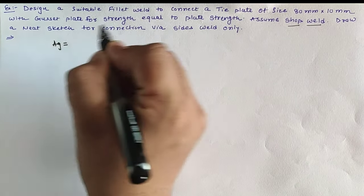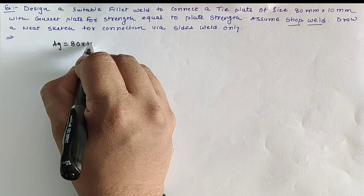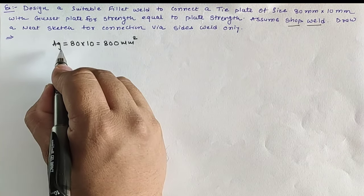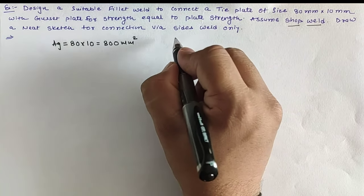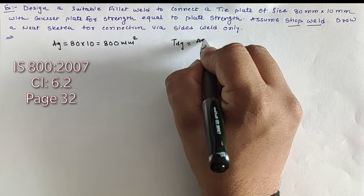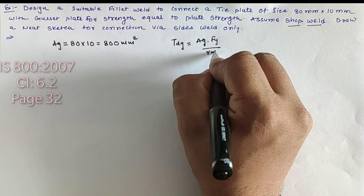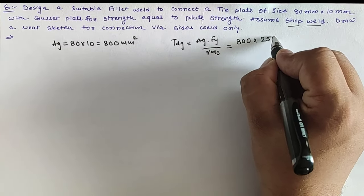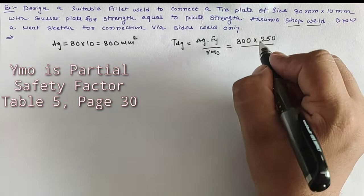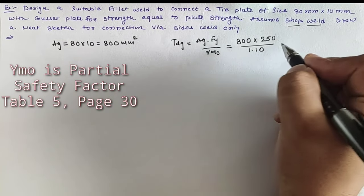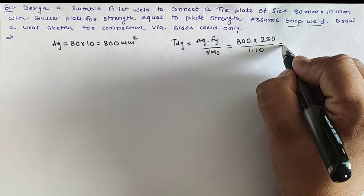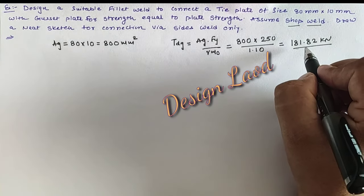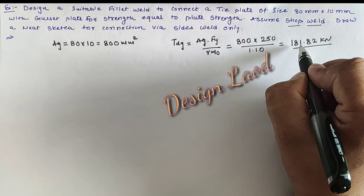The gross area is given as 800mm². For this gross area, Tdg is equal to Ag × fy / γm0, where Ag equals 800mm², fy is 250 N/mm², and γm0 is the partial safety factor equal to 1.10 from page number 30, table number 5. The value is 181.82 kN, so we have to design the fillet weld according to the design load of 181.82 kN.